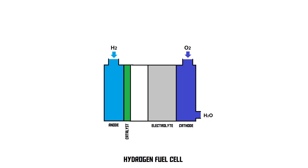Right here, you can see my schematic drawing of a hydrogen fuel cell. On the left side, you can see there is an anode, and on the right side, there is the cathode. The anode and the cathode are hollow areas in which gas can be put. So inside the anode, this is where the hydrogen gas goes, and the oxygen goes into the cathode. In between them, you'll find a catalyst, which is the green layer in this drawing, and an electrolyte.